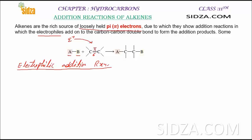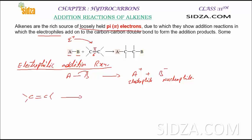Let's check the mechanism of how this addition reaction actually occurs. First, the reagent AB will dissociate into an electrophile and a nucleophile by heterolytic bond fission. Suppose both electrons shift towards atom B, and you get an electrophile A+ and a nucleophile B-. Due to the presence of pi electrons in alkenes, the electrophile will attack on the carbon-carbon double bond, the pi bond breaks, and it forms a bond with atom A. You get a carbocation as the intermediate. This is the first step: attack of electrophile on the alkene.